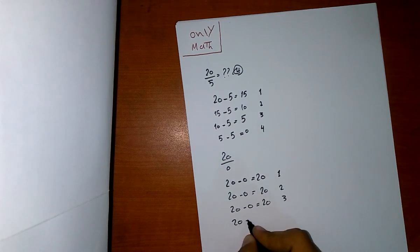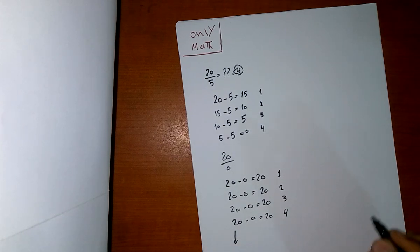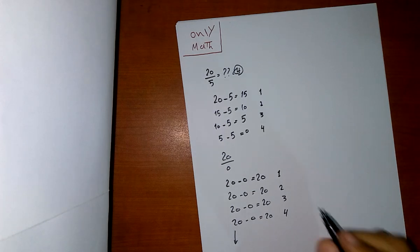20 minus 0 will be 20, number 4, and you will go on forever. So there is no accurate value